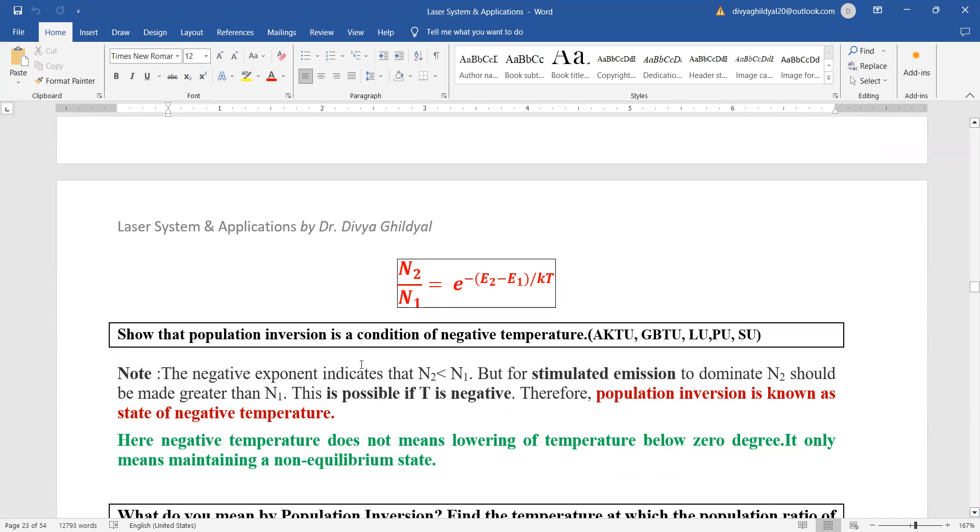show that population inversion is a condition of negative temperature. Now what do you mean by negative temperature? Now you can see this formula N2 upon N1 equal to E to the power of minus E2 minus E1 upon KT. Here the negative exponent indicates that N2 will be less than N1. But for stimulated emission to dominate so that laser action happens, N2 will be greater than N1. This is possible when this quantity T here will become negative. So minus minus will become plus. So population inversion is basically a case or a state of negative temperature.